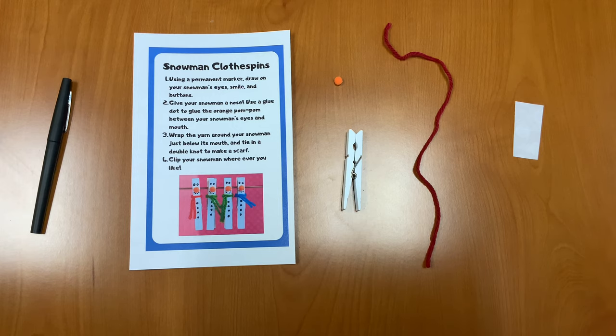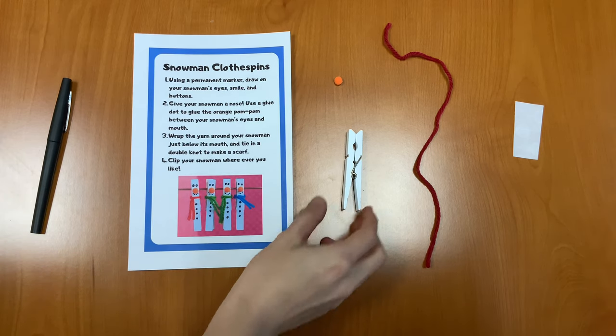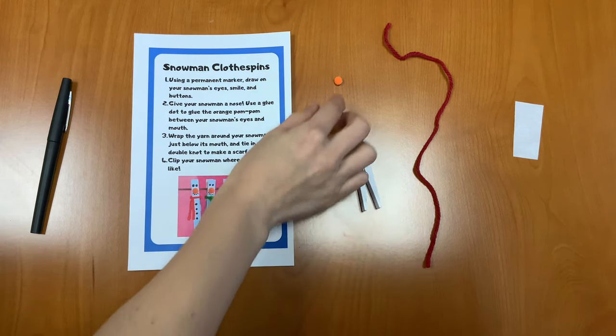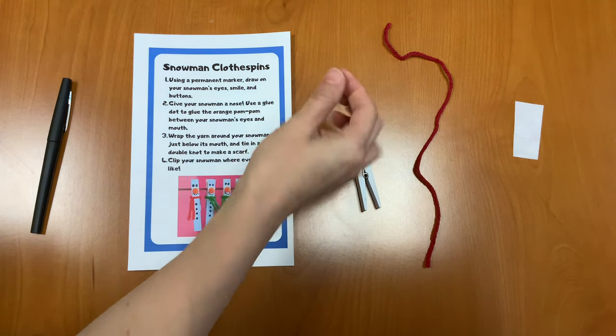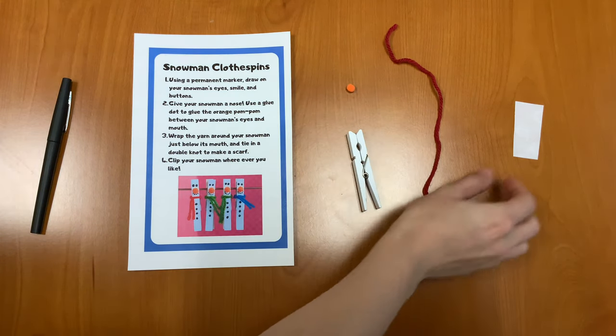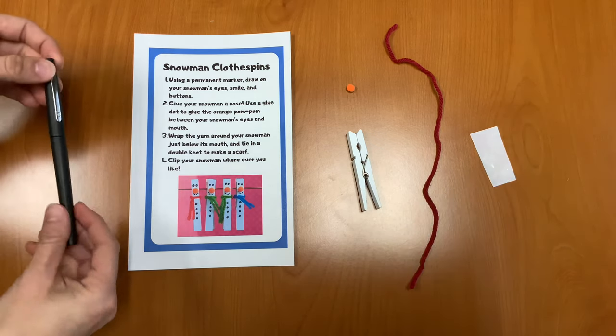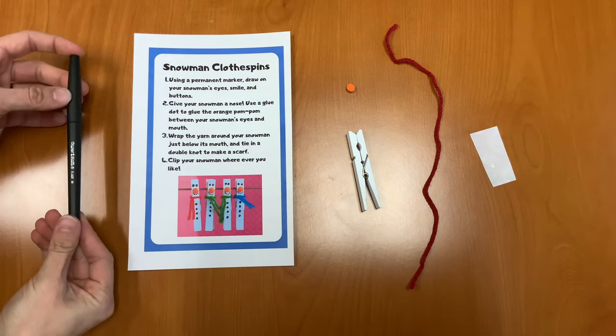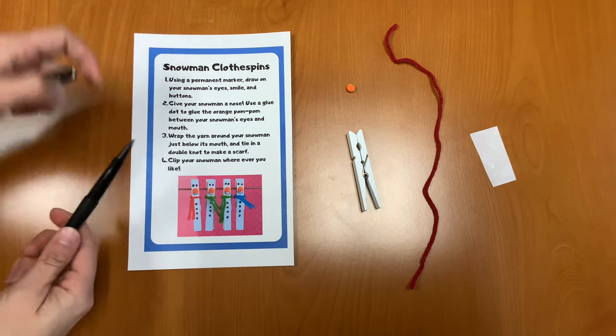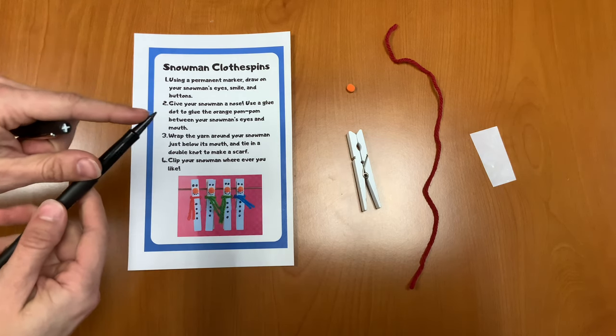In your Take and Make kit you should have your instructions, a white clothespin, a teeny tiny orange pom-pom, a piece of yarn, and two small glue dots. You're also going to need a black marker, so you can use a permanent marker or something with a fine small tip just like that.